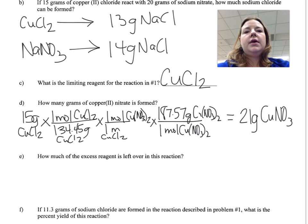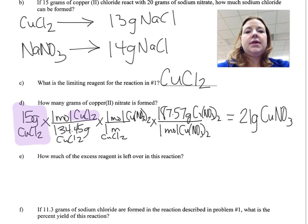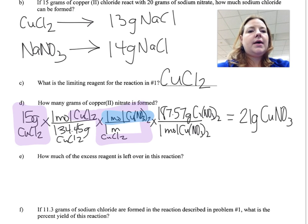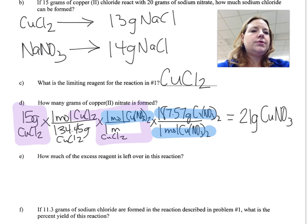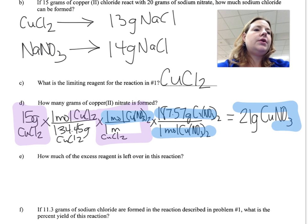For letter D, you should have started with 15 grams of copper chloride, figured out how many moles of copper chloride you have, used your mole-to-mole ratio to go to copper nitrate, then used 1 mole of copper nitrate equal to its molar mass. You should get 21 grams of copper nitrate formed.